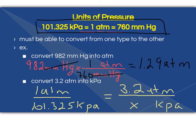In order to get my answer here, what I need to do is 3.2 multiplied by 101.325 divided by 1 will get me the answer of 324 kPa.